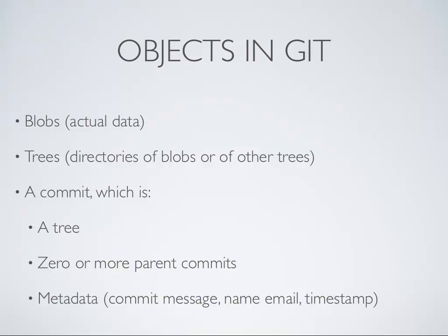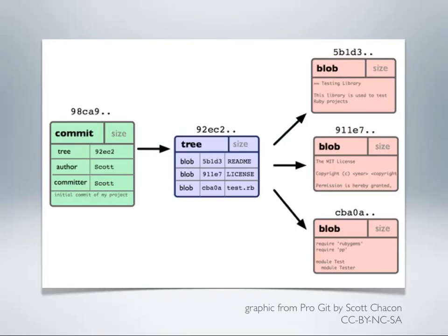A tree is a directory of blobs or of other trees, so you can have subdirectories and your whole file system can be represented in this schema. Or a commit. A commit is an object that has pointers to three things: one is a tree — the current state of your working directory at the time you make the commit; zero or more parent commits (normally one, though at your very first commit it will be zero since it's the beginning of history, and if you're merging branches there will be two or more); and metadata, which includes a message from you saying what you worked on, your name, your email, and a timestamp.